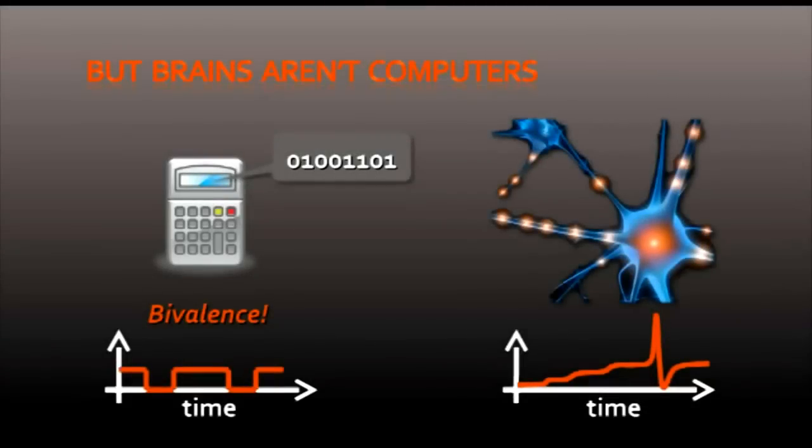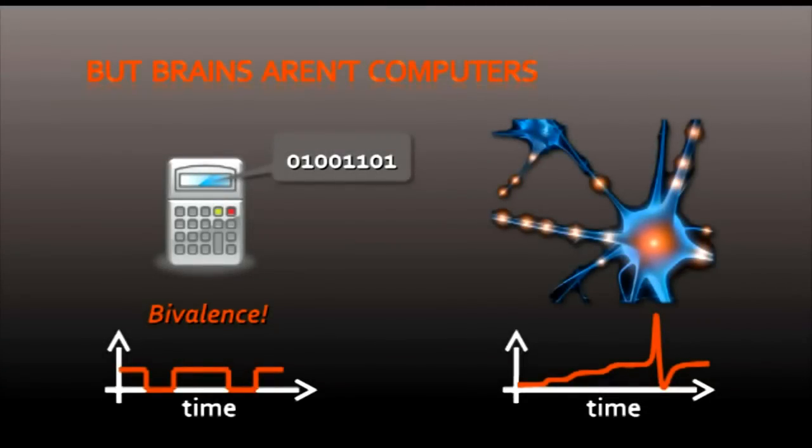A neuron is not so fundamentalist. It sees shades of grey. It has more degrees of freedom. And you might ask, well, you've just contradicted yourself, Bernardo. You said that computers reflect the patterns of our thinking. And that is true. Because although our neurons are not bivalent, the way we use them globally is bivalent.